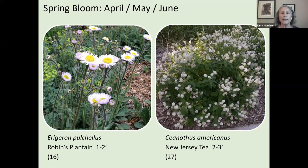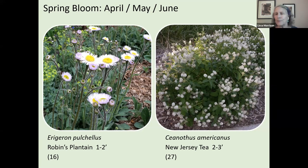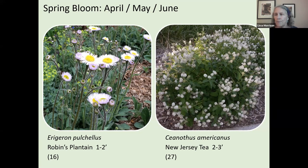New Jersey tea is a great native shrub to use because there aren't many natives of this size. It has a very deep taproot, so once you place it, try to leave it. It will take a few years to get large and thick, but it is prunable and shapeable, works well in flower beds, grows slowly, and supports many different butterflies and bees.